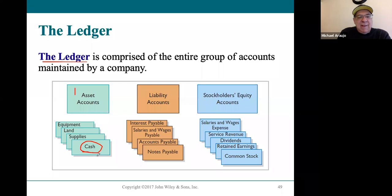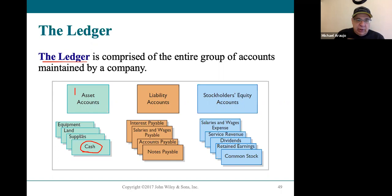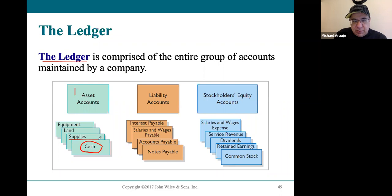The other current assets would be listed after cash, and they would each have their own section. It's almost like a book where every topic has its own chapter. The cash account would have its own section, and only the things that happened in cash would show up in that part of the ledger. The next account — for example, supplies — would have its own section too, and only what's going on in supplies would be listed there, and so on for all the accounts.